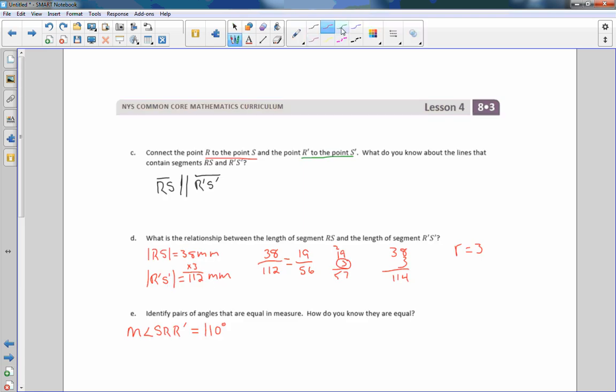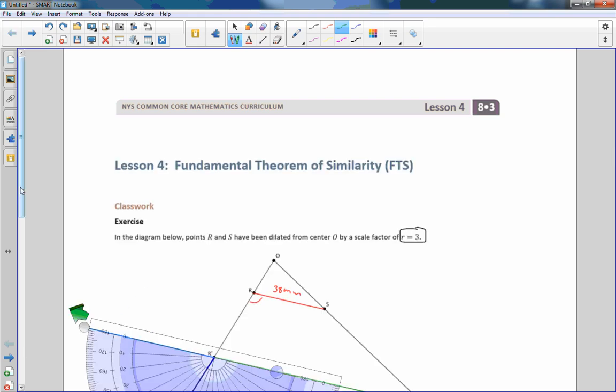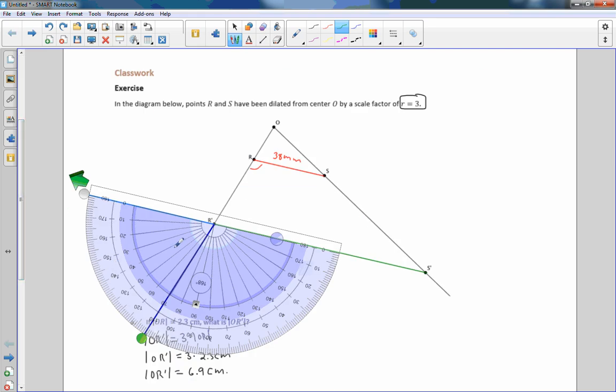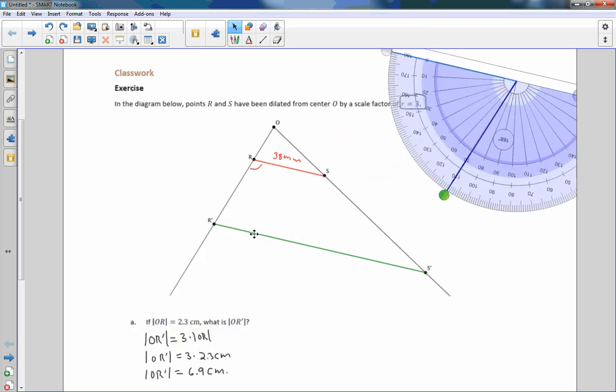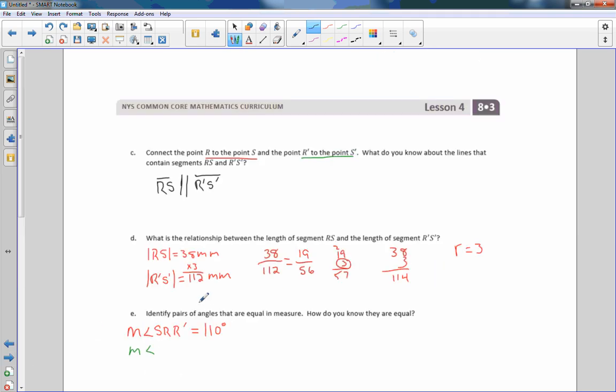So now I can say the measure of angle, and I go back and name that properly, moving this out of the way. Okay, I don't have a point over here, so I need to name that something, and I'm going to name this. So if I put a dot over here and call it T, then this is angle S prime R prime T. So I'm going to call that angle S prime R prime T, and that also equaled 110 degrees.